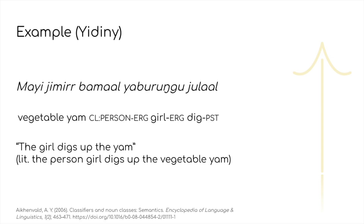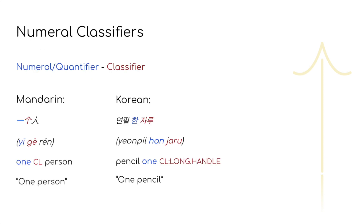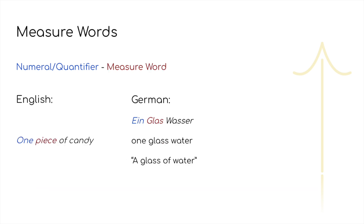Going back to the Idigne example, this is what we'll simply call noun classifiers, to distinguish them from the other types of classifiers yet to be covered. The second type we'll be looking at are numeral classifiers. These are likely the most well-known examples of classifiers in languages, being common in many East and Southeast Asian languages. The distinction here is that the classifiers occur after a numeral or other quantifying expression. This is in many ways similar to measure words found in English and other European languages, though here they function as sort of massifiers and focus more on the quantity of something, rather than just being used to count them.